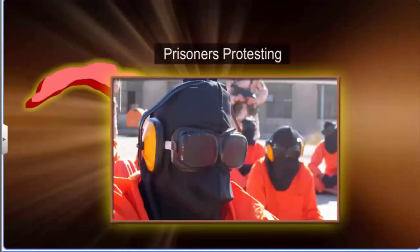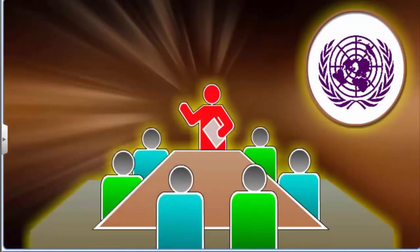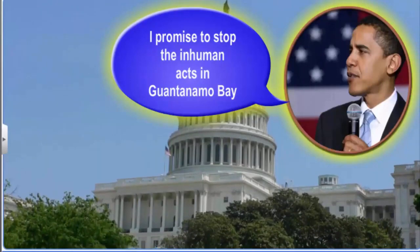Prisoners protested through hunger strikes. The UN then set up an inquiry committee and found that many prisoners were not being released in spite of being proved innocent. The UN Secretary General ordered the sealing of the prison. However, the US government paid no heed to these appeals and protests. Recently, President Barack Obama has promised to put a stop to this inhuman act as soon as possible.